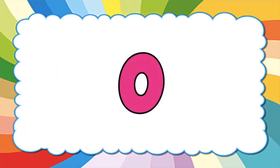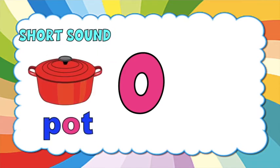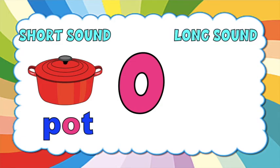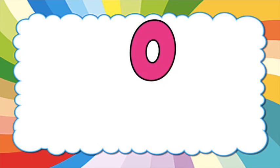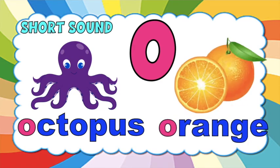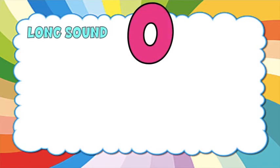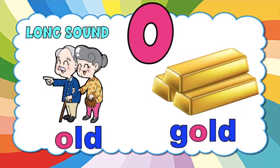How about O? The short sound for O is /o/, like pop. The long sound for O is like its own name, O — like rope. Short sound: O — octopus. O — orange. Long sound: old. Gold.